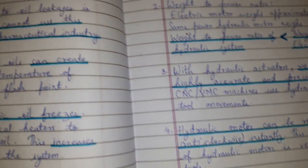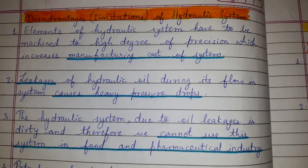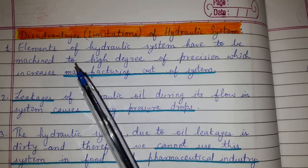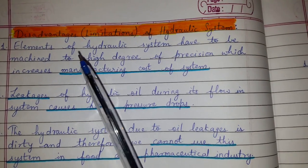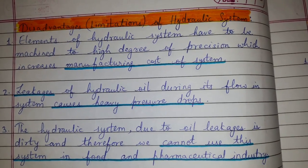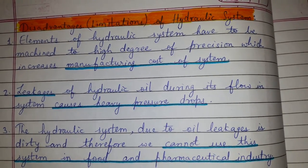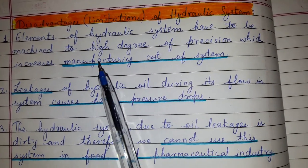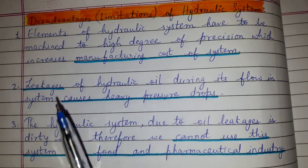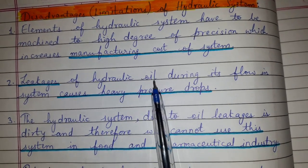Now regarding the disadvantages or limitations of hydraulic systems: elements of a hydraulic system have to be machined to a high degree of precision, which increases the manufacturing cost of the system.